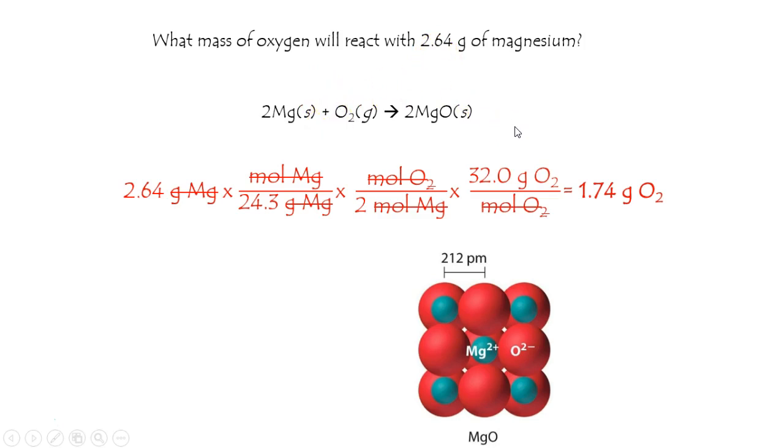And from that, you'd get your recipe. Combine, that is your experimental procedure, combine 2.64 grams of magnesium with 1.74 grams of oxygen if you want to make magnesium oxide without wasting anything.